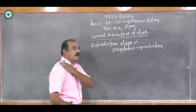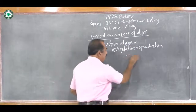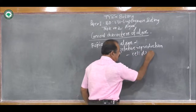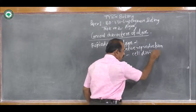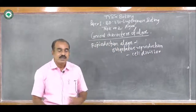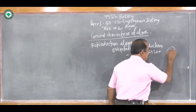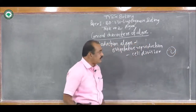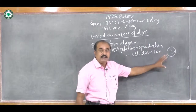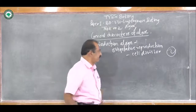When the Algae are unicellular, the type of Vegetative Reproduction is Cell Division. Such type of Cell Division reproduction is found when the Algae are unicellular. For example, Chlorella. Chlorella is a unicellular Alga. When they have a single cell, their reproduction takes place vegetatively with the help of Cell Division.